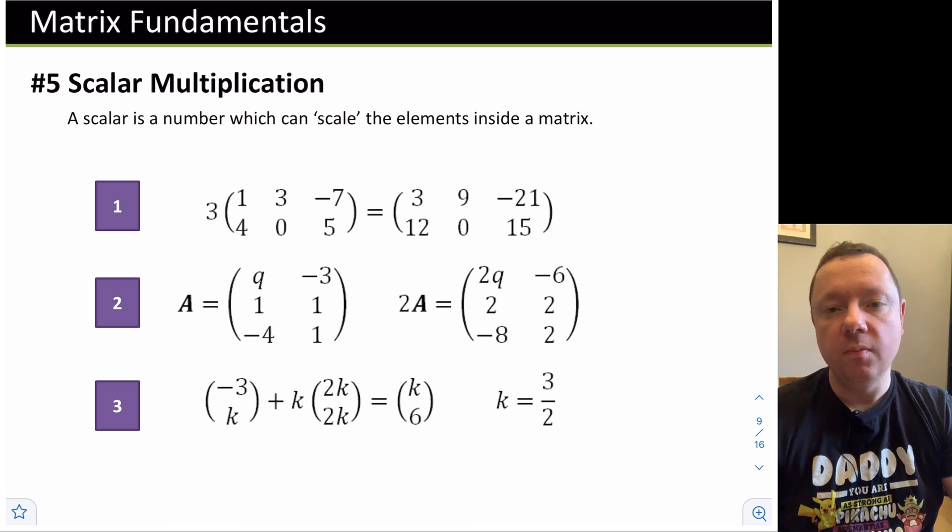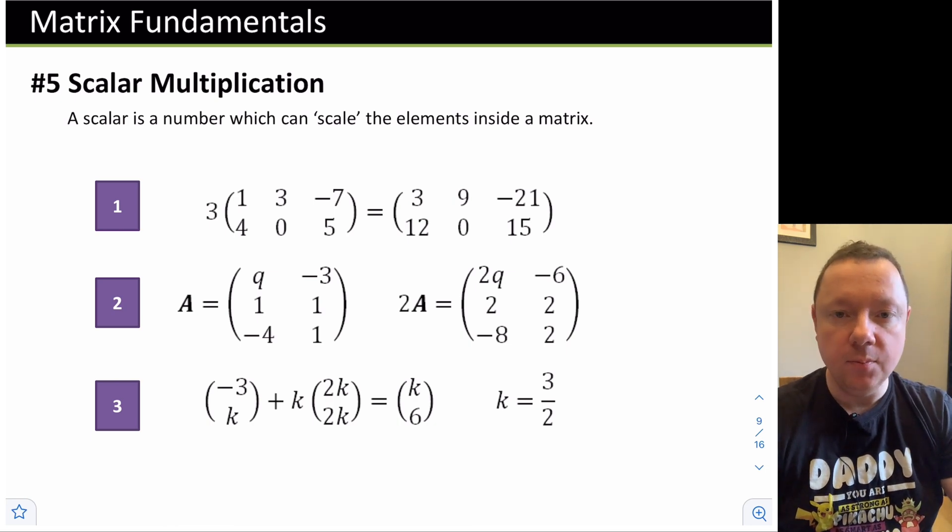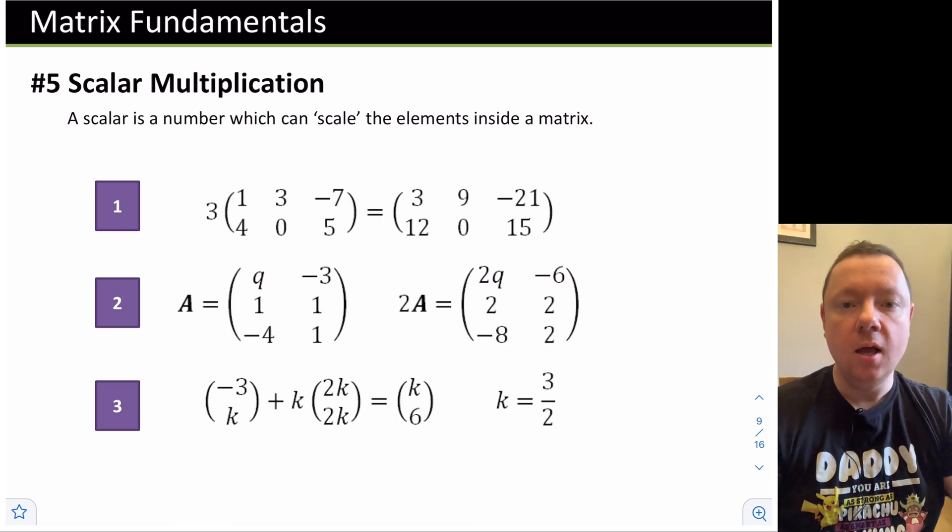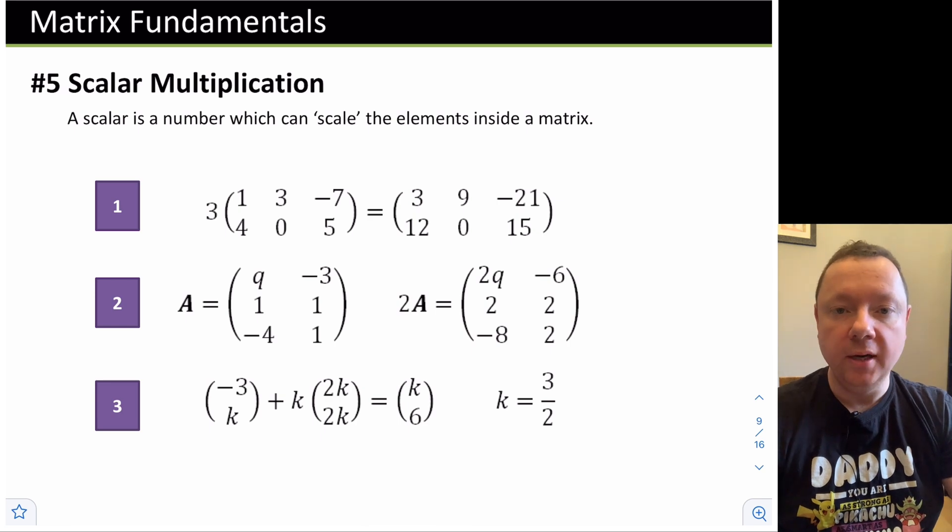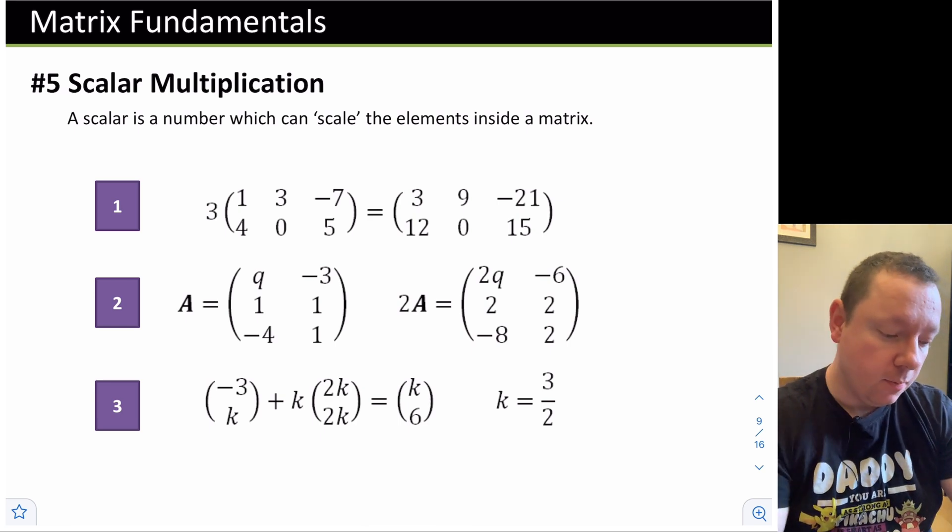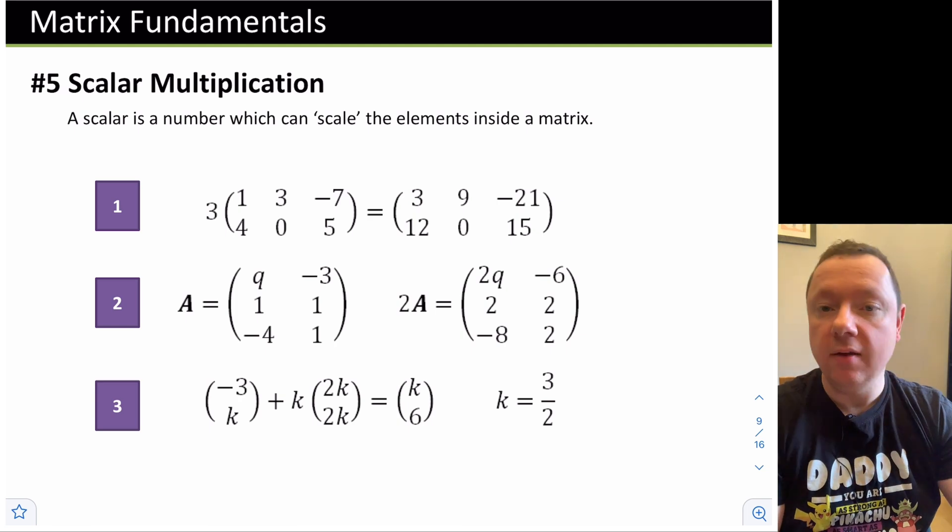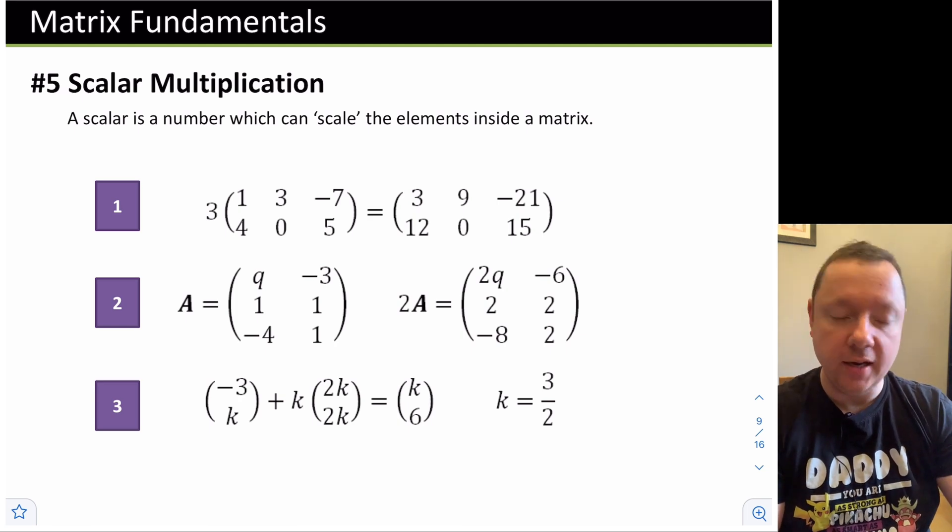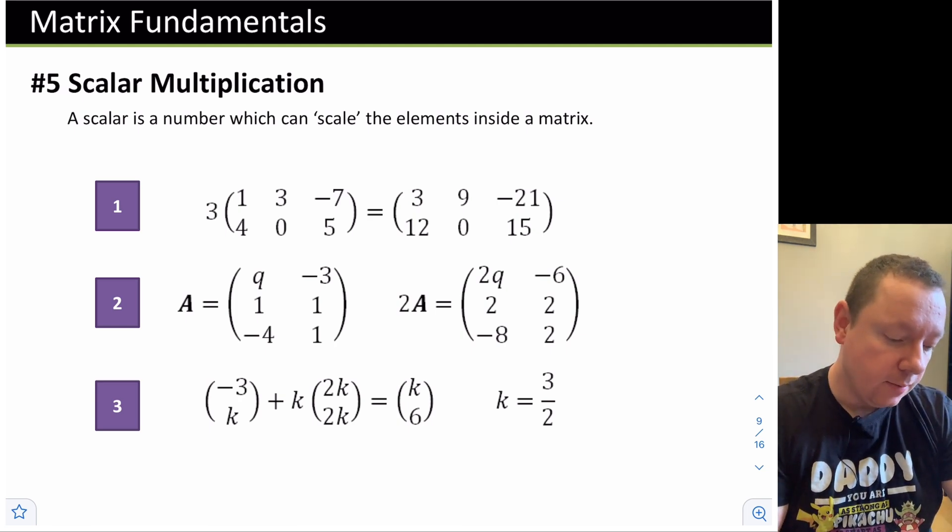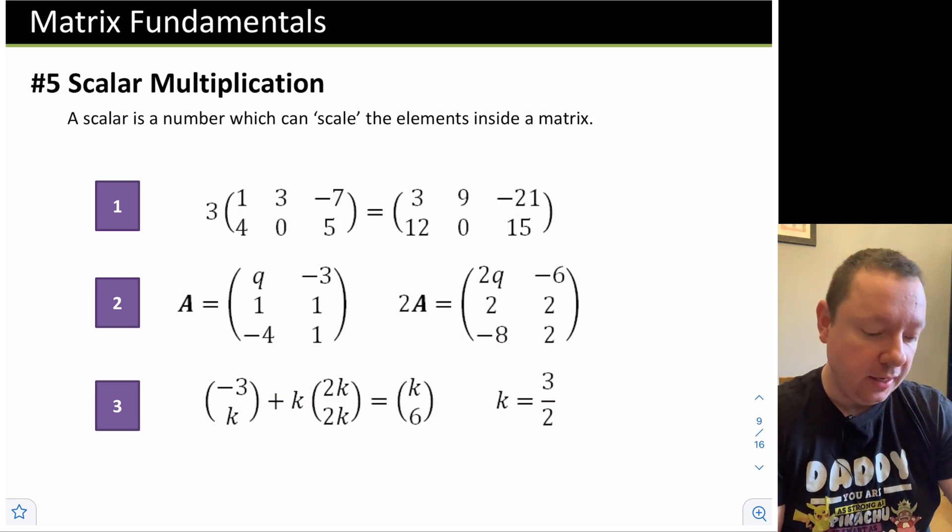There's two types of multiplication with matrices. The first type we're going to look at is the simplest type called scalar multiplication. In a later video, we'll look at normal matrix multiplication or vector multiplication. Scalar multiplication is when we just times a vector by a number. We scale the vector up. Have a look at example 1, which says 3 times this vector. We're just times each element by 3. So 3 times 1 is 3, 3 times 3 is 9, 3 times -7 is -21, 3 times 4 is 12, 3 times 0 is 0, and 3 times 5 is 15.